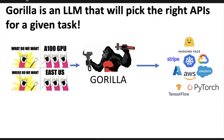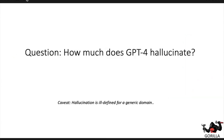To build this model, we had to answer a few interesting research questions. The first was: how much does GPT-4 hallucinate? Hallucination is very ill-defined in the general purpose scenario — for example, if I ask 'when was Michael Jordan born,' is it Michael Jordan the basketball player, or Michael Jordan the professor of machine learning at Berkeley? Without clear intent it's hard to discern. But I claim this is not true in the case of APIs and services.